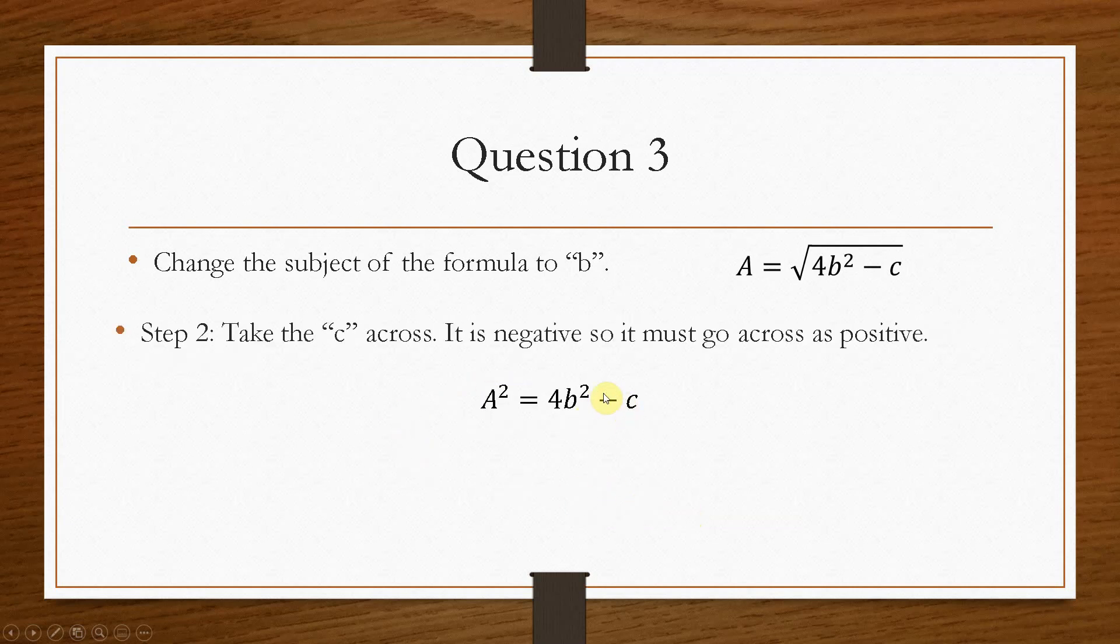So now we take the minus c because, again, the minus c has nothing to do with the 4b squared. So we can take that across and it will go over as plus. The equation then becomes a squared plus c equals 4b squared.